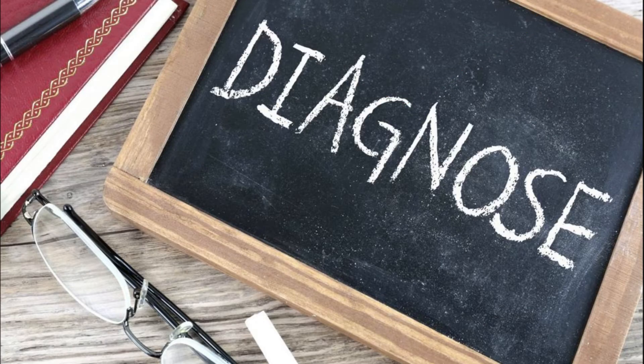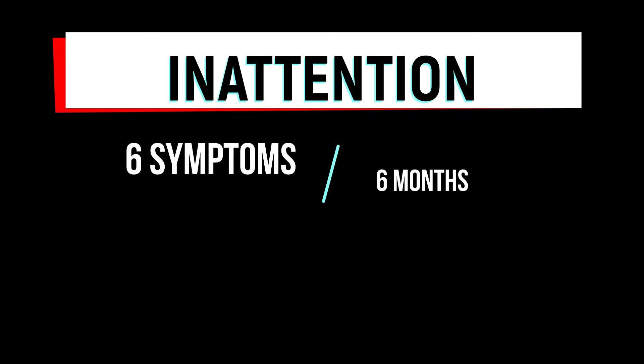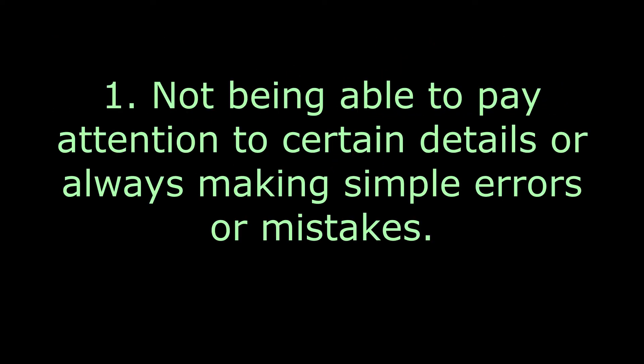When an individual is diagnosed with ADHD, the first component is the inattention. This inattention will interfere with a person's student life, work life, or with issues at home. We have to have six of the following criteria or symptoms for at least six months in order for a person to be diagnosed with ADHD. Here are the six plus symptoms.